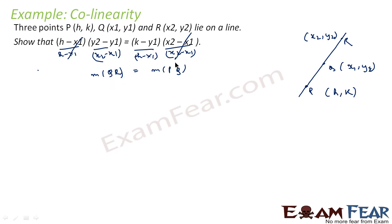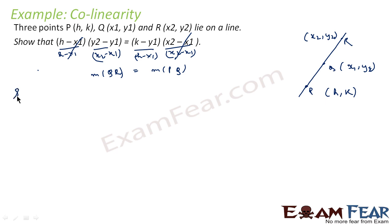I am using the reverse engineering approach. That means we start from the conclusion and work backwards. If we start with M of QR equal to M of PQ, that is also true. Since the three points lie on a straight line, slope of PQ equals slope of QR, because the whole line has a single slope. Whether you take PR, PQ, or QR, each segment has the same slope. So let's try to solve now.